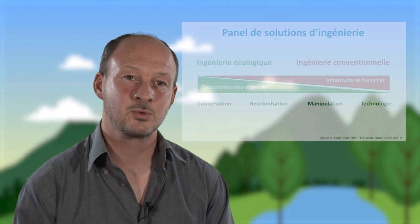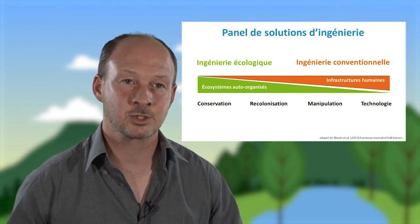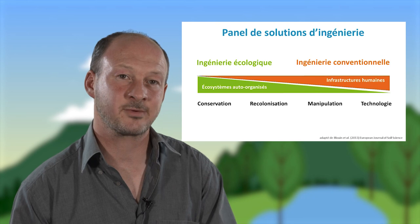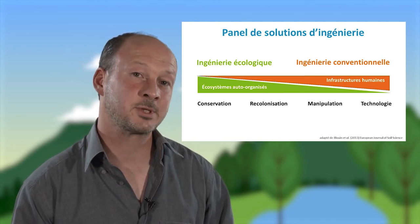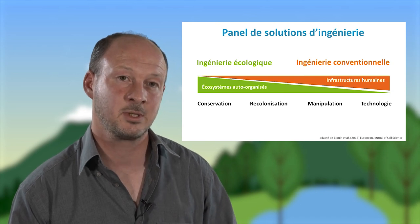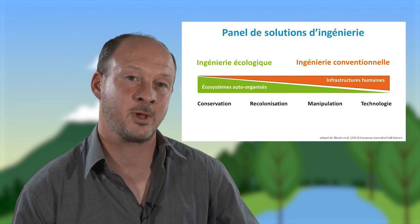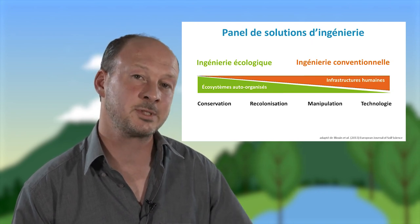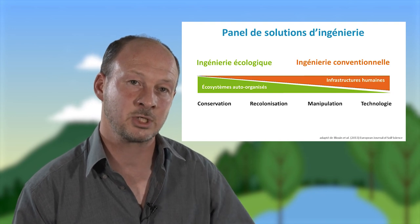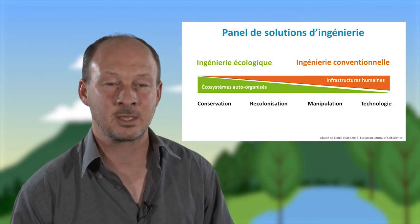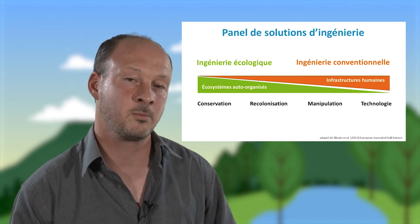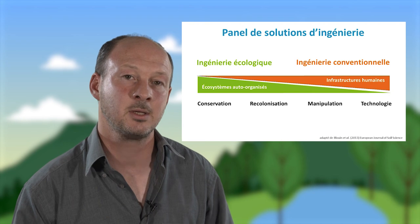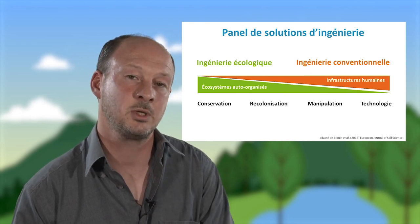Ainsi, il existe tout un panel de solutions allant de l'ingénierie écologique à l'ingénierie conventionnelle, reposant plus ou moins sur l'auto-organisation des écosystèmes ou sur des infrastructures produites par les humains. On peut d'abord penser à conserver la diversité et les services écosystémiques qu'elle fournit. Quand cette diversité a été érodée, on peut favoriser la recolonisation par des corridors écologiques. Quand les capacités de dispersion ne sont pas suffisantes, on peut réinoculer ou manipuler la diversité. Et dans certains cas, il n'y a pas d'autre solution que les technologies fabriquées par les hommes.